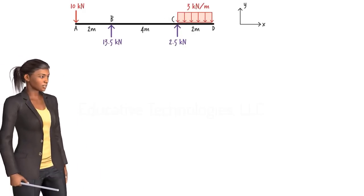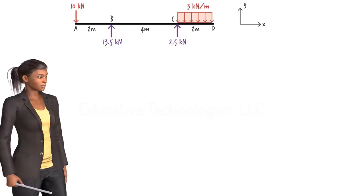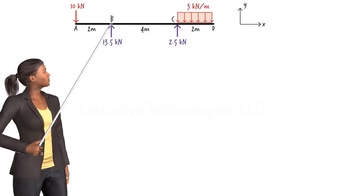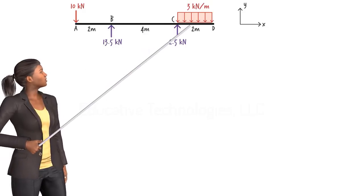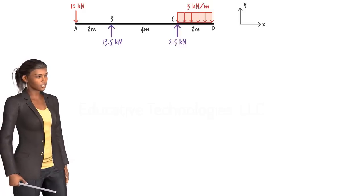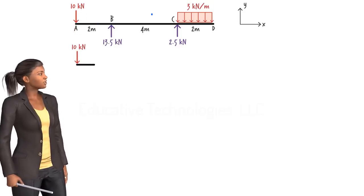To write the shear and moment equations, we need to cut the beam at several places along its length. The load and support reactions divide the beam into three segments, AB, BC and CD. Therefore, we need to cut the beam three times, once in each segment, resulting in three distinct free body diagrams.